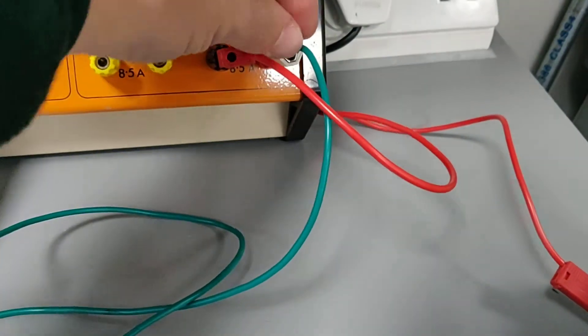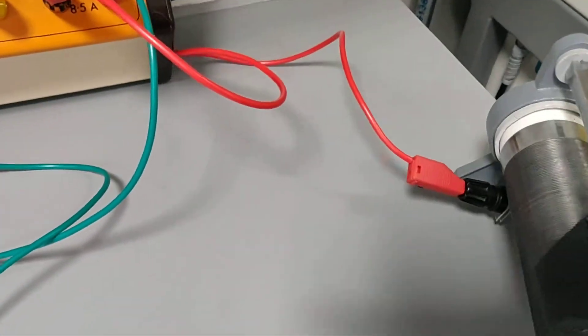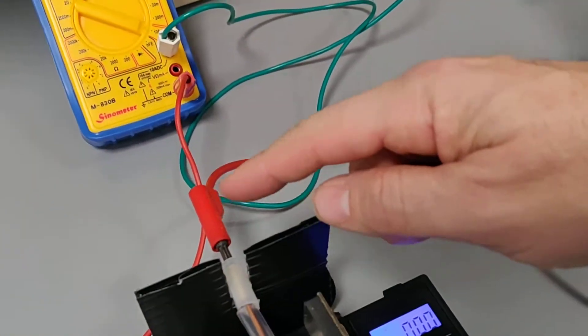That goes into the positive side of the power pack. The negative is going through a rheostat variable resistor onto the other side of the wire.